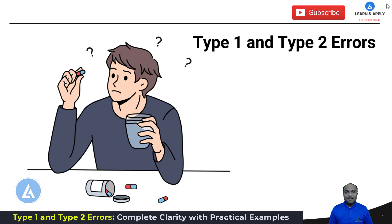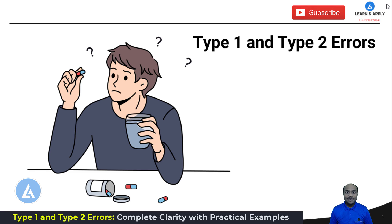Hello friends, welcome back. In this video we are going to understand the next important topic from hypothesis testing. The name of the topic is type 1 and type 2 errors. We are going to understand both types of errors with the help of practical examples for easy understanding and better clarity. So let's begin.